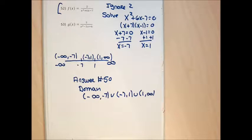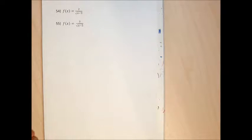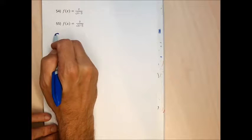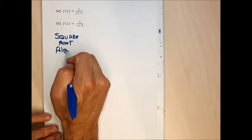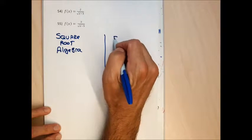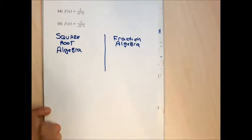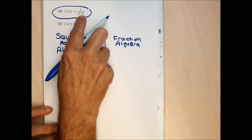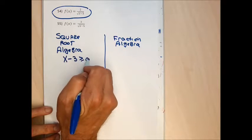Problem 53 should be similar. Problem 55 is tricky — it's a combination of a fraction and a square root, so I have to do both the square root domain algebra and the fraction algebra and integrate what they tell me together. The fact that there's a square root buried in the denominator of a fraction means I need to set what's under the square root greater than or equal to zero.